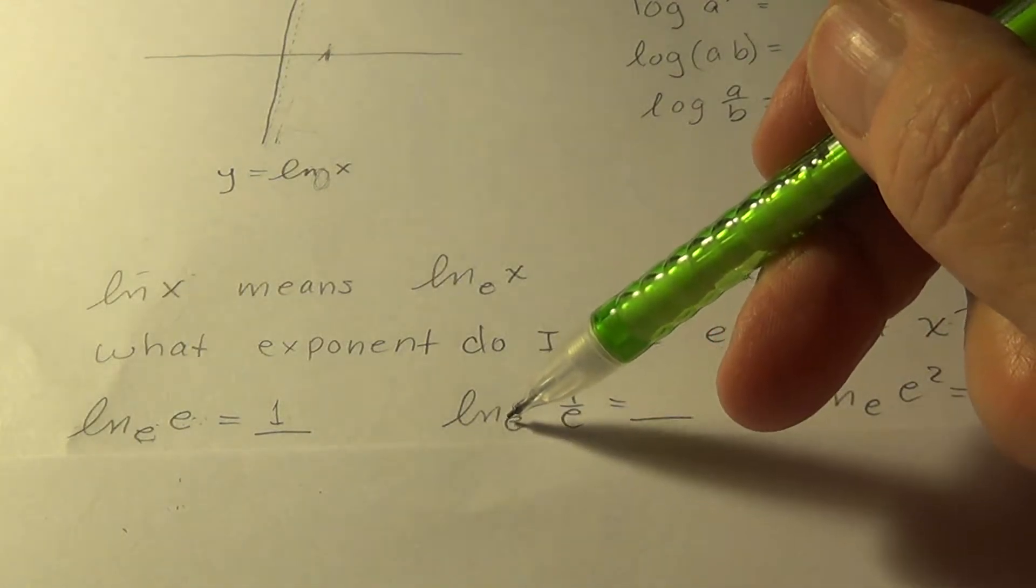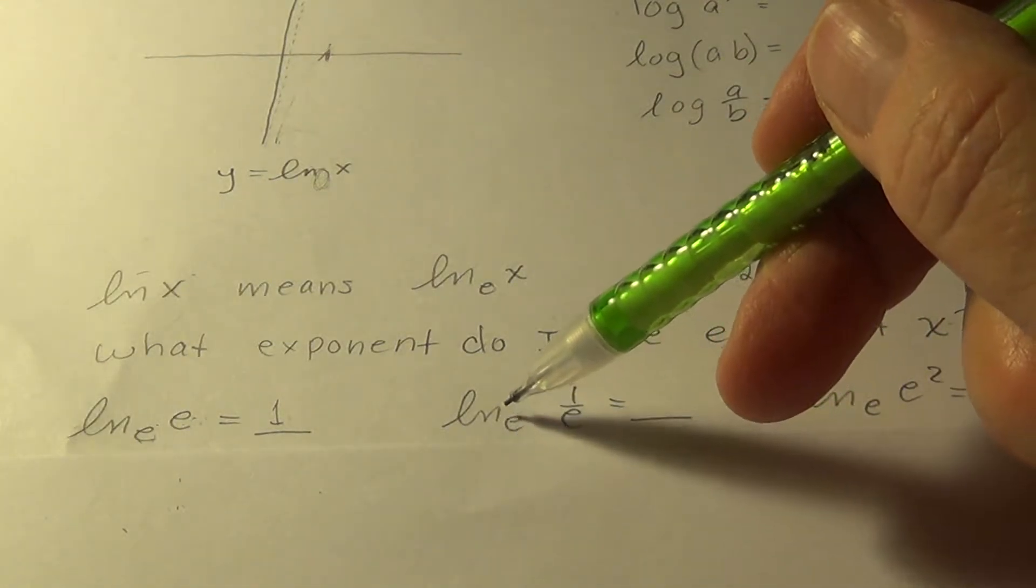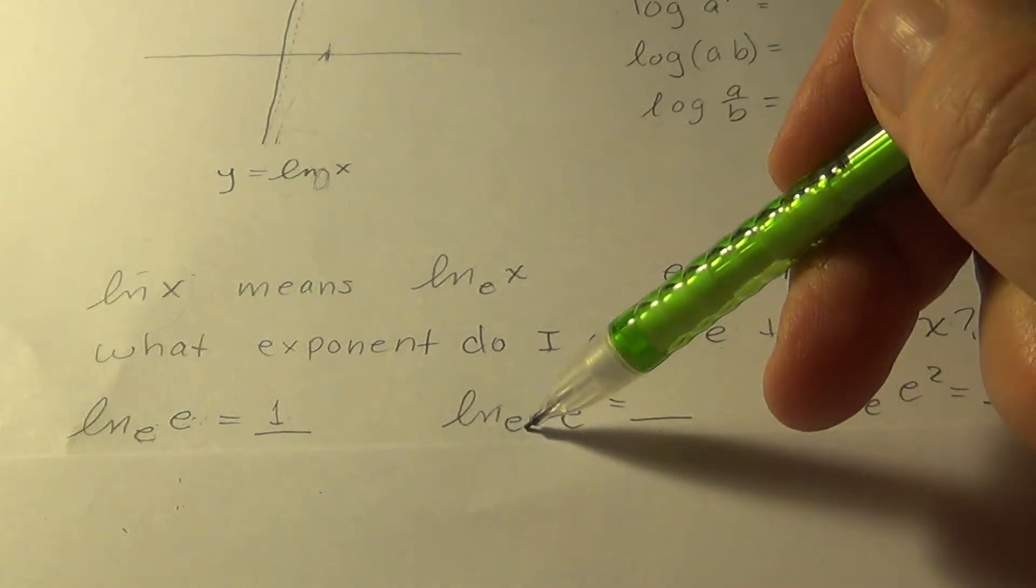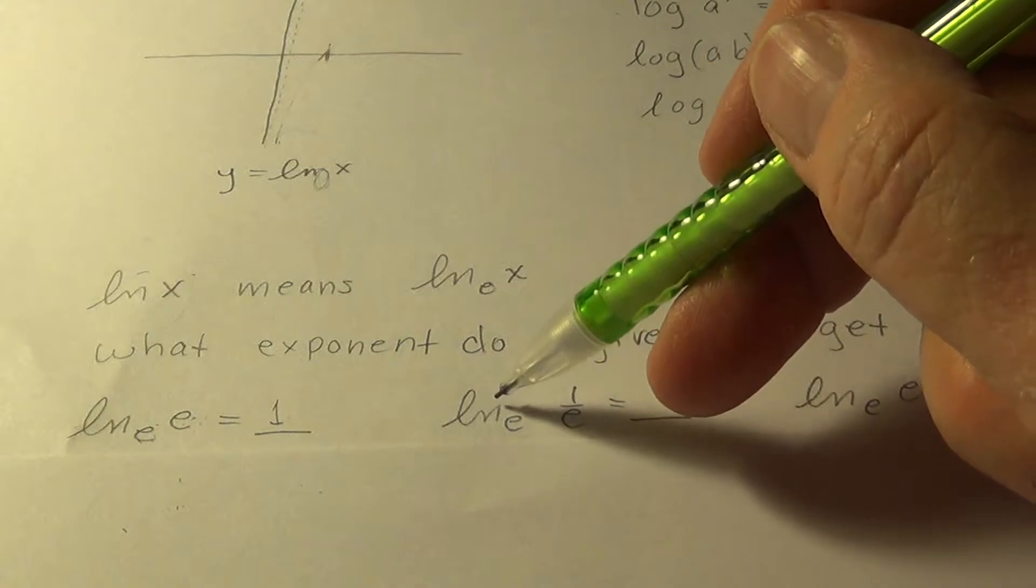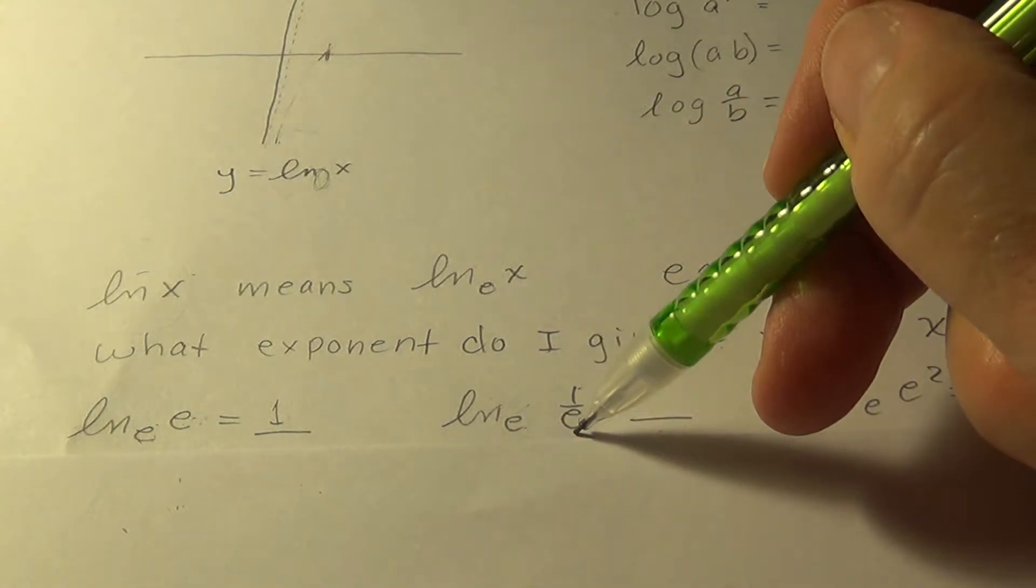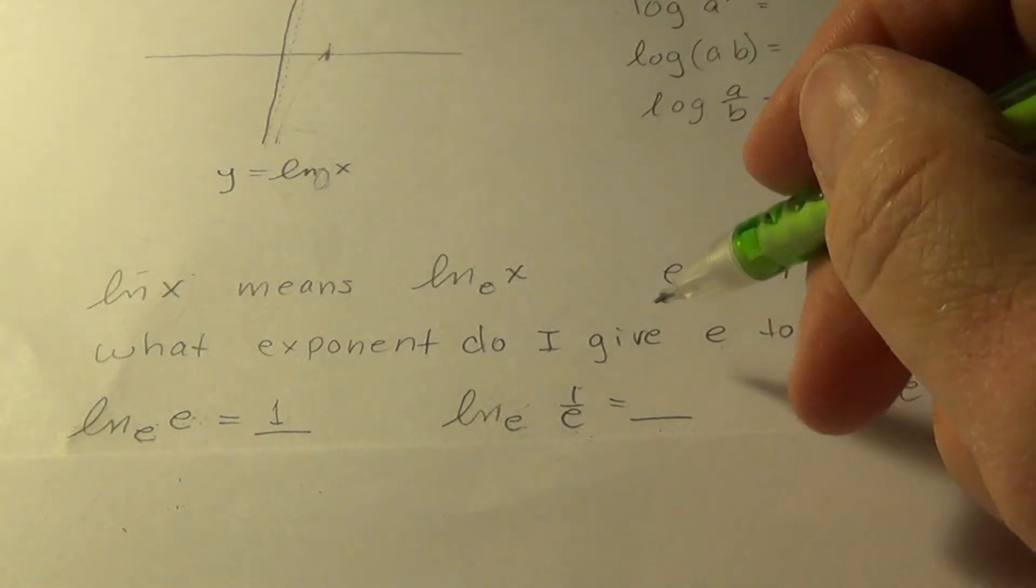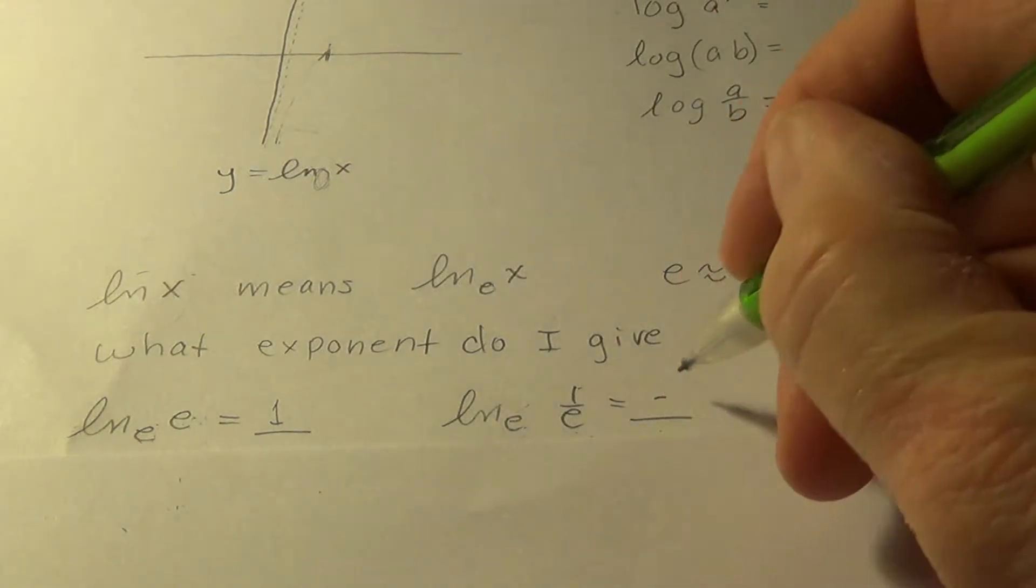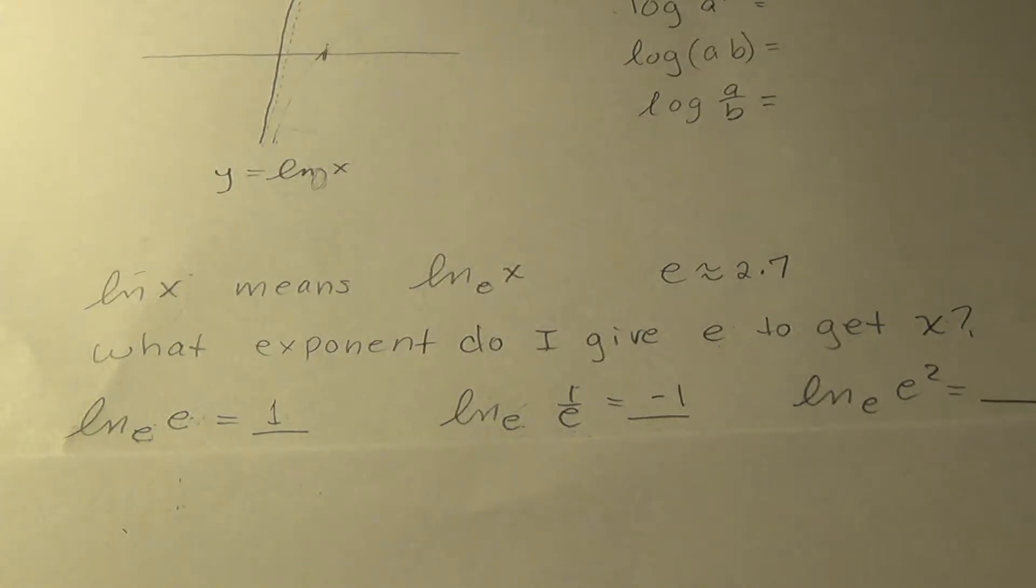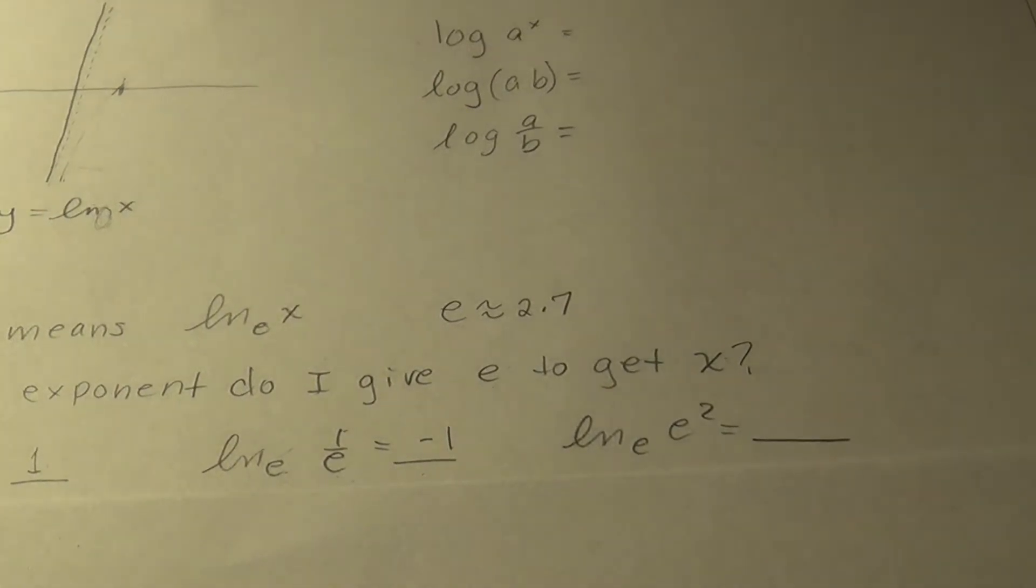Alright. What about, and again, this is just for training. It's not normally going to be there, but the ln tells you that it actually is. ln, what exponent do I give e to get 1 over e? Hopefully you can fill it in before I did. Negative 1 always inverts the number like that.